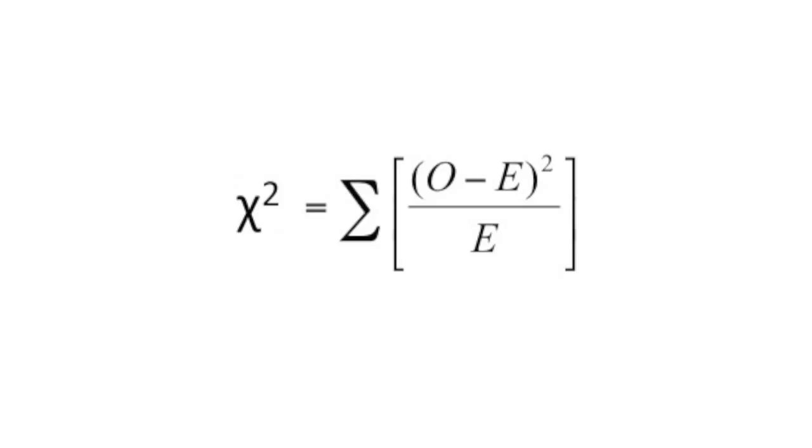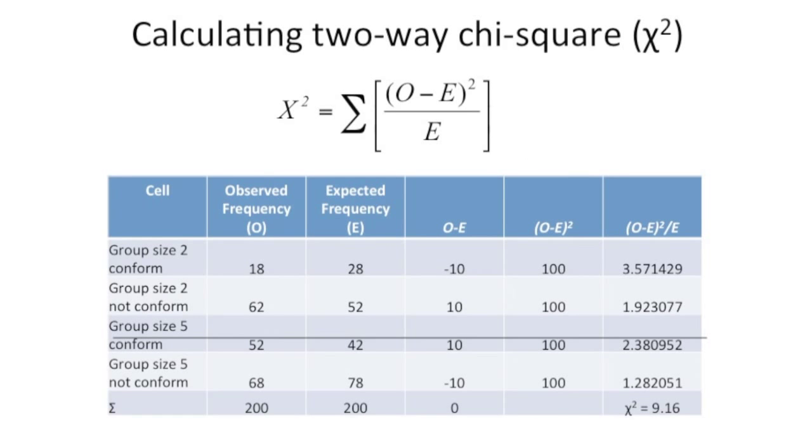Now to show you how this is calculated step by step, the table at the bottom is useful. The first column of figures shows the observed frequency. In our example, this is the number who conformed and did not conform in each of the group sizes. So as you can see, this sums to a total of 200 people in the study. The second column are the expected frequencies in each cell, which have previously been calculated.